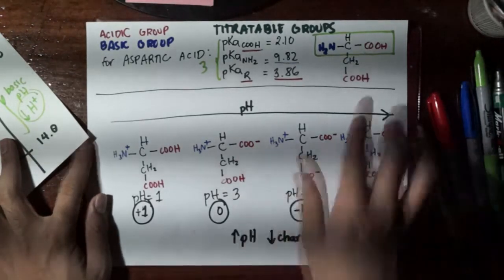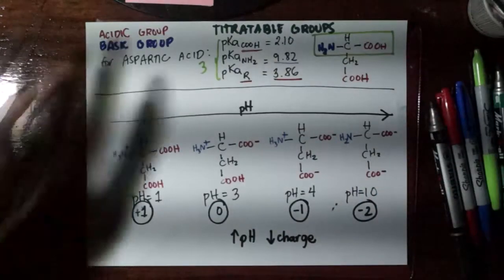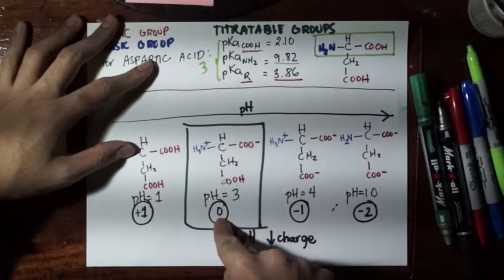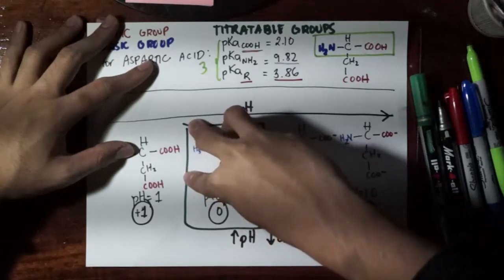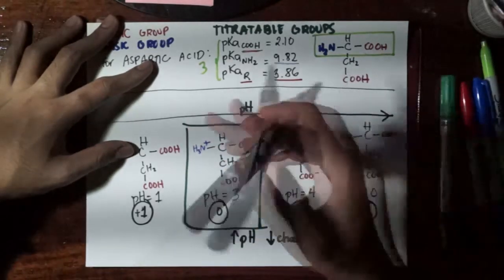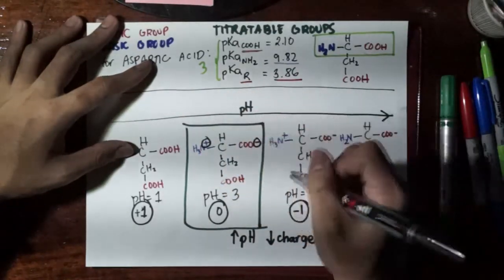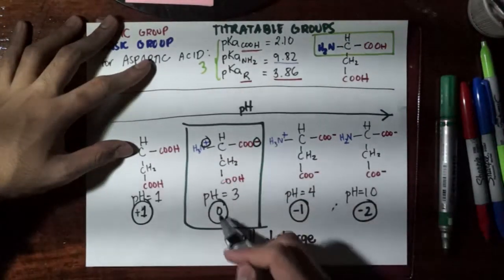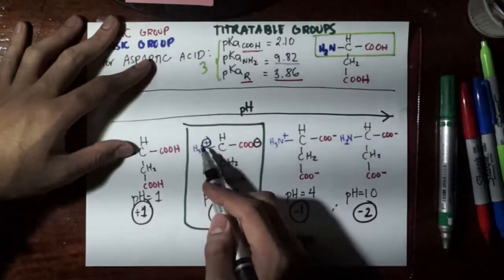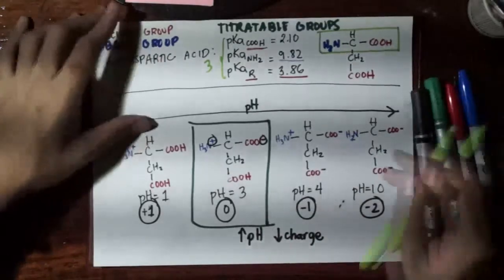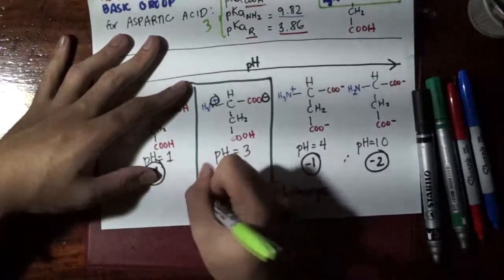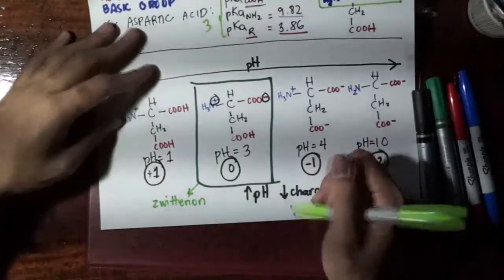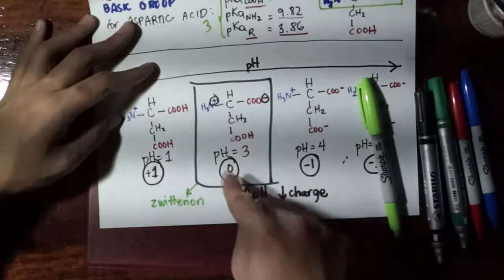There is something special about the state where the net charge is zero. It is not because the entire structure is absent of charge, but because it has one positive charge and one negative charge. An amino acid will never in reality become zero as in no charge at all — it will have a zero net charge as the result of a +1 charge and a −1 charge. This state of the amino acid is known as the zwitterion — that's a German word — the state where it achieves a net charge of zero.